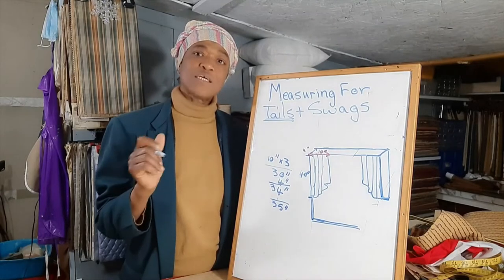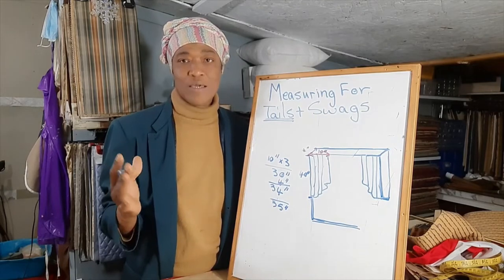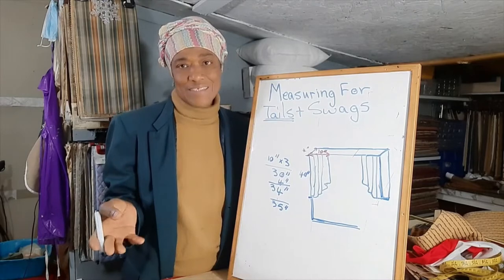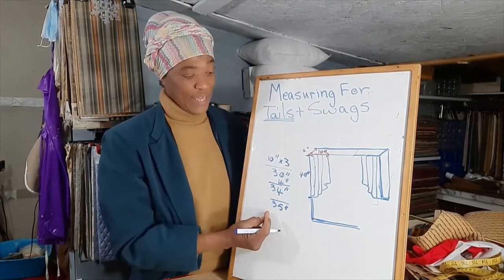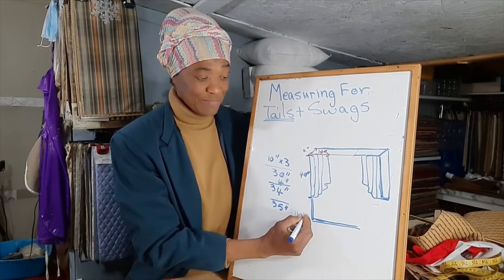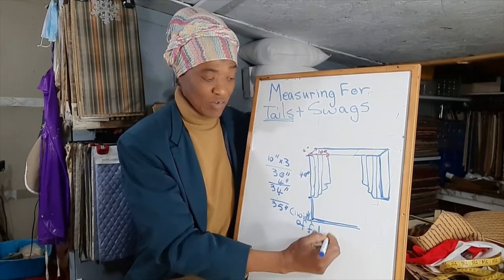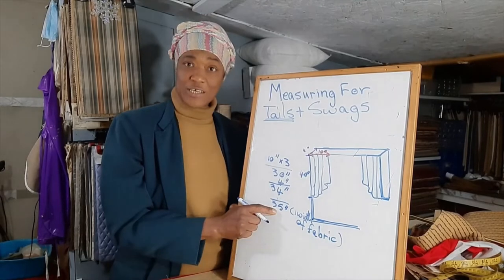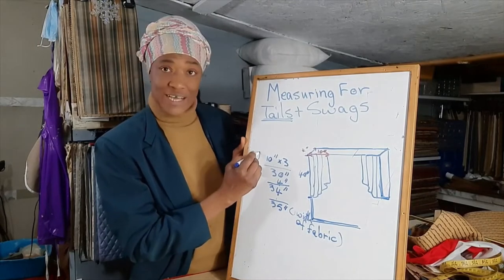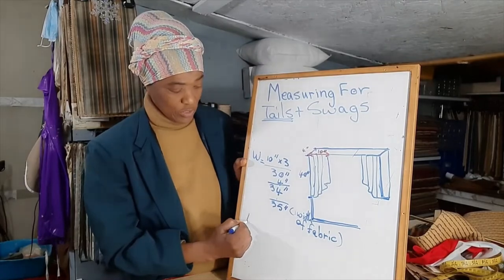Decor fabric comes in 54 to 60 inches wide, sometimes even double width at 118 inches. So we know that one width of fabric is sufficient for the width of this tail. Now that we've dealt with the width, let's move on to the length of the tail.